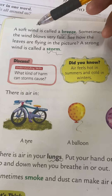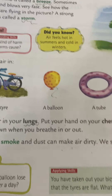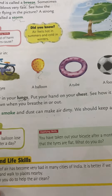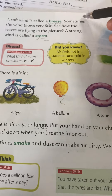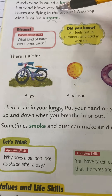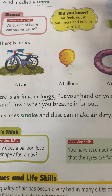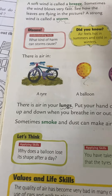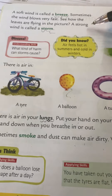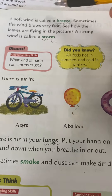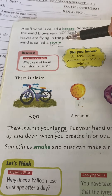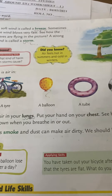A soft wind is called a breeze. Remember, air also has different speeds. A soft wind blowing smoothly is called a breeze. Sometimes the wind blows very fast and extremely strong, and you see everything moving up in the sky. See how the leaves are flying in the picture here. A strong wind is called a storm. So remember: a soft wind is called a breeze, whereas a strong wind is called a storm.